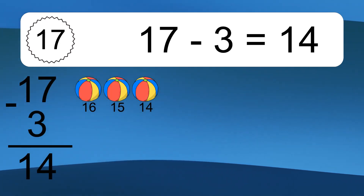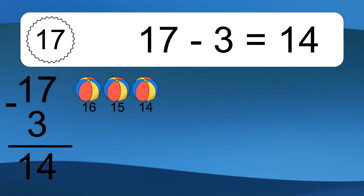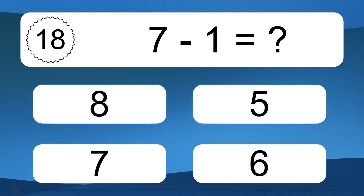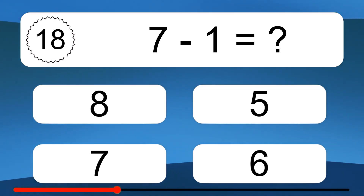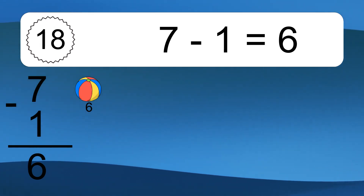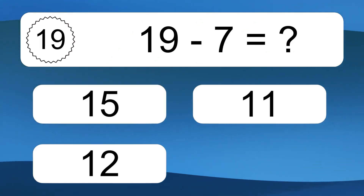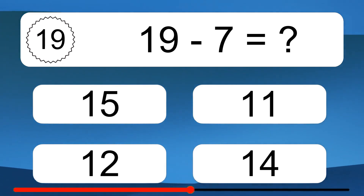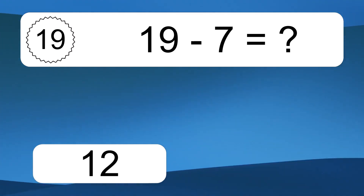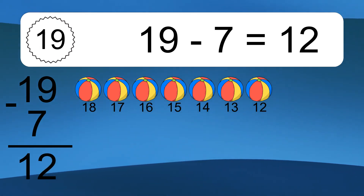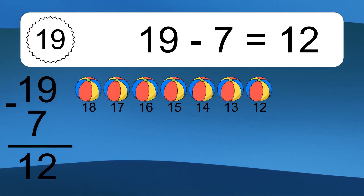17 minus 3 equals 14. Let's count it: 16, 15, 14. 7 minus 1 equals what? 7 minus 1 equals 6. Let's count it: 6. 19 minus 7 equals what? 19 minus 7 equals 12. Let's count it: 18, 17, 16, 15, 14, 13, 12.